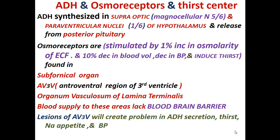ADH, osmoreceptors, and thirst centers are actually one and the same thing — they are present in the same areas of the brain. The osmoreceptors are the receptors which receive changes in osmolarity. We are going to study mainly ADH, but at the same time we are going to see the osmoreceptors and the thirst center, because they are all present in the same brain areas.